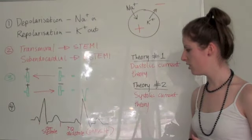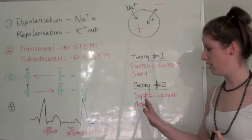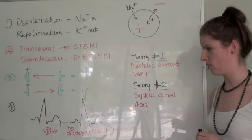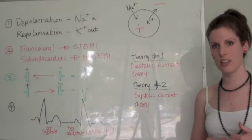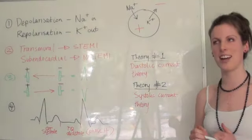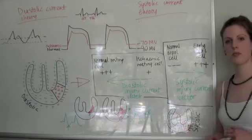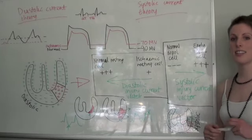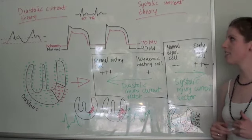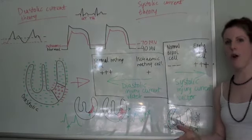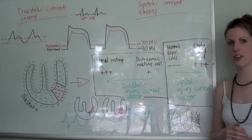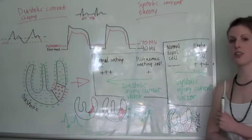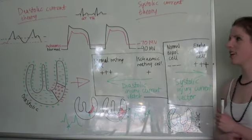And the TQ interval can be likened to phase 4 in the cardiac myocyte action potential. Okay, now listen up because these two theories are kind of opposite in the way they work. So I'm going to first tackle the diastolic current theory.